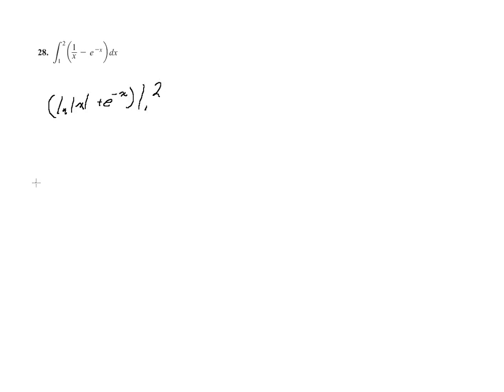So we'll have the natural log of 2 plus e to the negative 2 minus the natural log of the absolute value of 1, and I'm going to put parentheses around that, plus e to the negative 1.